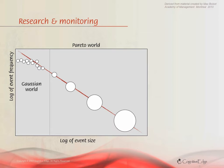On the left-hand side of the model — that anomaly I pointed out earlier — what I've got is a large number of probable or possible events and a large number of actual events.